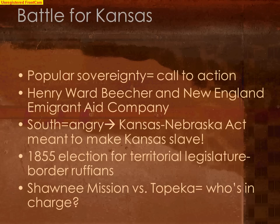During the 1855 election for the territorial legislature, we see thousands of what are known as border ruffians — pro-slavery advocates flooding over the border from the neighboring slave state of Missouri to vote yes for slavery. These were not Kansas residents; they were Missourians coming over the border to vote, which was obviously fraud. The pro-slavery territorial government won and set up their legislature at Shawnee Mission in Kansas. The free soilers, angry over this fraud, set up their own competing legislature at Topeka, Kansas. The question became: who is actually in charge?